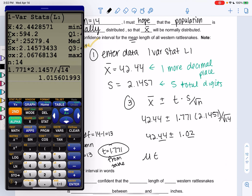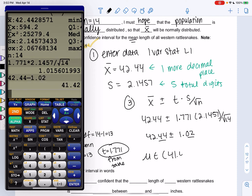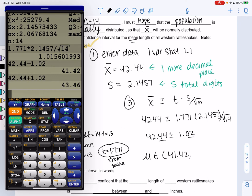And then we'll get mu is in the interval of 42.44 minus 1.02, 41.42, up to 42.44 plus 1.02. Right, the bigger number should come second. 43.46. And that's our confidence interval in math notation.